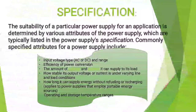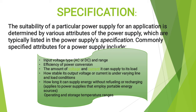The suitability of a particular power supply for an application is determined by various attributes of the power supply, which are typically listed in the power supply specification. Commonly specified attributes include efficiency of power conversion, how long it can supply energy without refueling or recharging, and operating and storage temperature ranges.